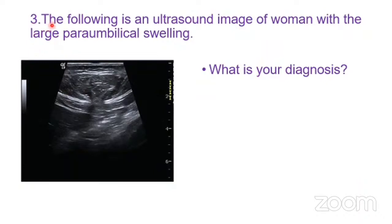Question three: the following is an ultrasound image of a woman with a large paraumbilical swelling — what is your diagnosis? The ultrasound shows the rectus sheath with a gap or defect in it, and herniation of bowel from the abdominal cavity into the extraperitoneal space. Air-filled loops of bowel are visible. This is a ventral incisional hernia.